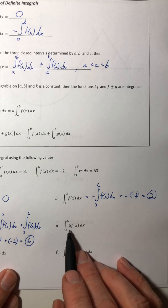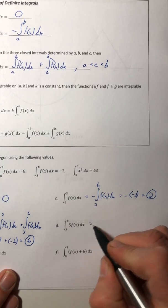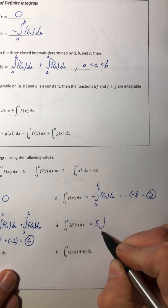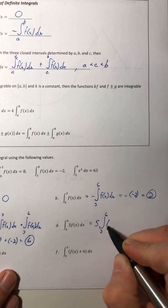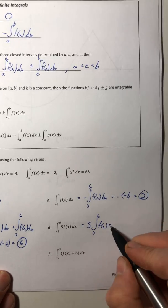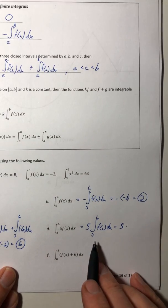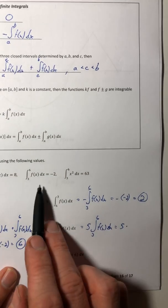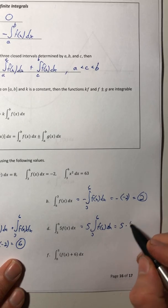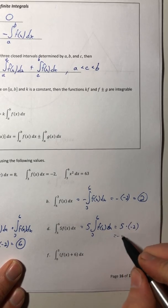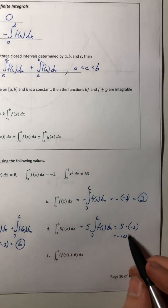Alright, part D, I can pull that 5 out. So it stays out there and then the integral has a value of negative 2, so I get a total of negative 10.